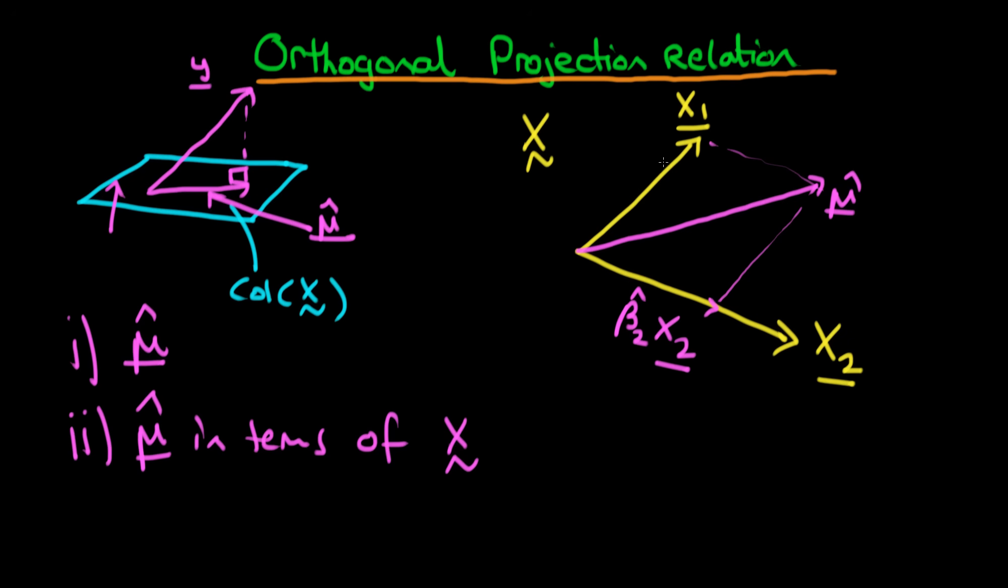We can think about mu hat as being the sum of these two vectors, which is the sum of going along here and then going up here.